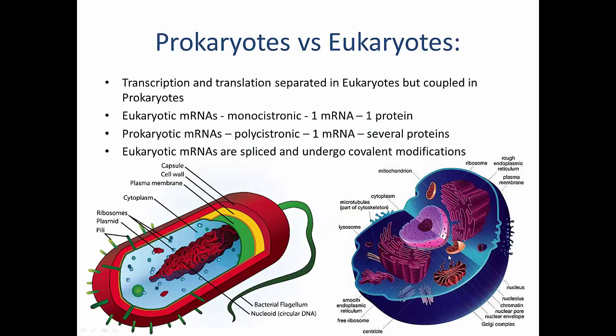There are significant differences between prokaryotes and eukaryotes in transcription and translation. In prokaryotes there are no internal membranes or structures, so there is no physical separation of transcription and translation. In eukaryotes, with multiple organelles and internal membranes, transcription and translation are physically separated: transcription occurs in the nucleus where the DNA is located, and the mRNA is then exported to the cytoplasm where translation occurs at the ribosomes.